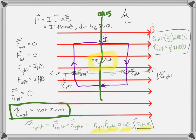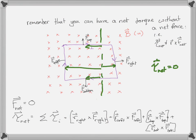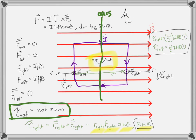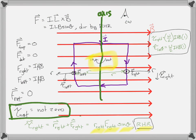If it rotates 90 degrees, now it's perpendicular to your screen and the magnetic field is pointing directly through the loop. We get back to this situation where the net torque is equal to zero. So it'll only rotate 90 degrees — and what's actually going to happen is the torque gets smaller and smaller as it rotates to 90 degrees.